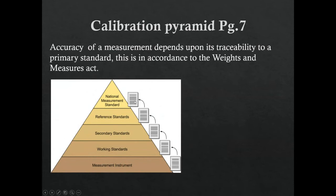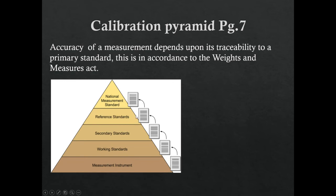Documentation goes along with all of this. The accuracy of the measurement depends upon traceability to a primary standard in accordance with the Weights and Measures Act, overseen by Measurement Canada. Every time a standard gets calibrated or created it comes with a piece of paper — for example, 'this is a kilogram plus or minus 0.00000001 grams.' Each step in the chain comes with paperwork telling us the degree of accuracy we should expect from that standard.